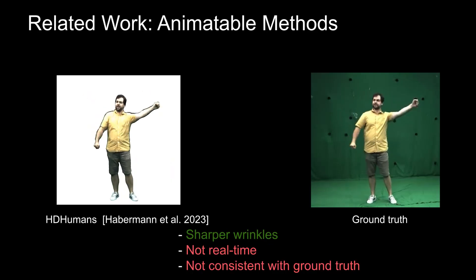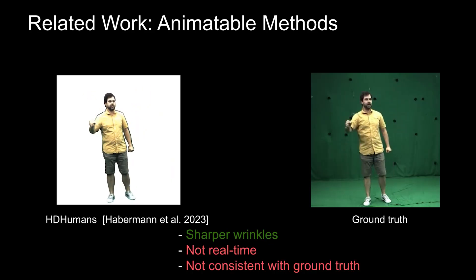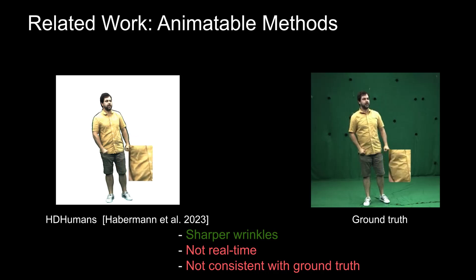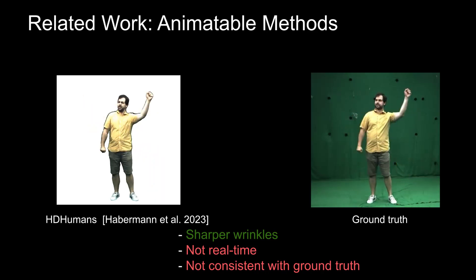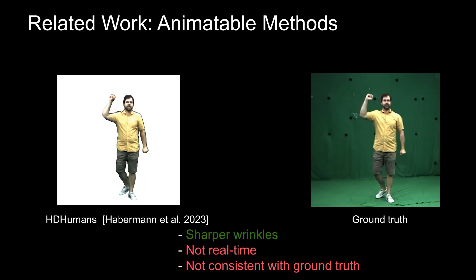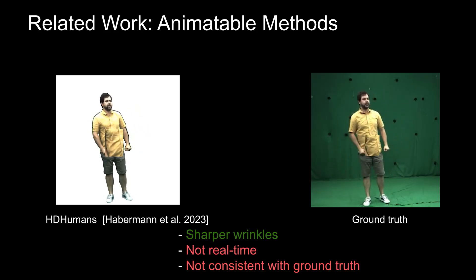Another more recent work is HDHumans, which is a hybrid explicit-implicit representation. While it can generate sharper images at 4K resolution due to its hybrid formulation, it is not real-time and it hallucinates wrinkles not present in the ground truth due to their adversarial training strategy.